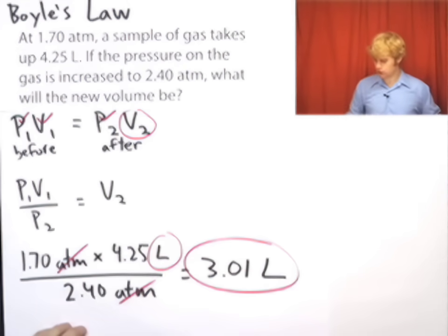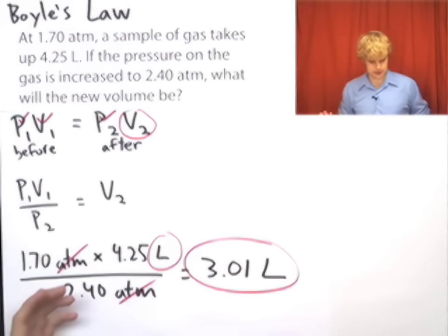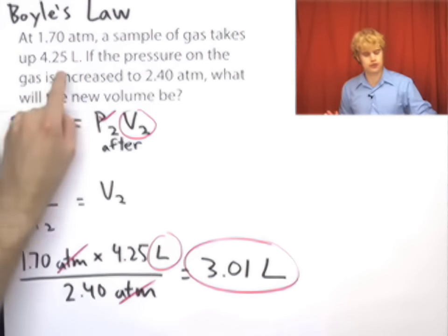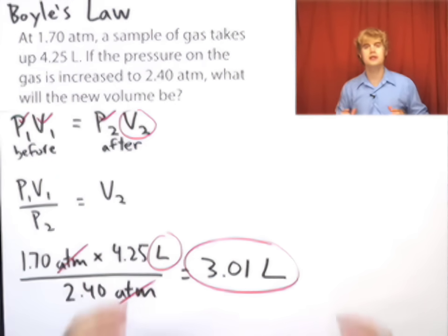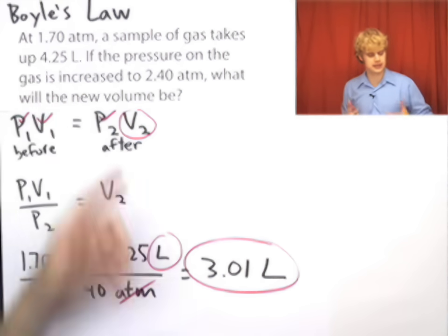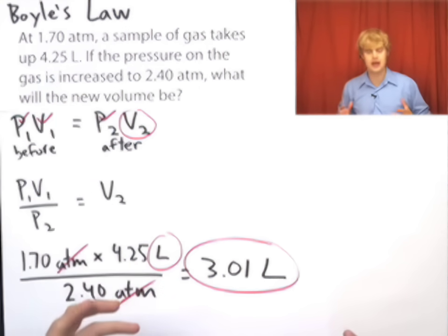Before we call it quits, let's see if this makes sense. Well, we started at 4.25 liters, and we increased the pressure on the gas, which means that we squeezed it into a smaller space. So 3.01 liters is less than 4.25 liters. This makes sense, that we'd have a smaller volume after increasing the pressure.